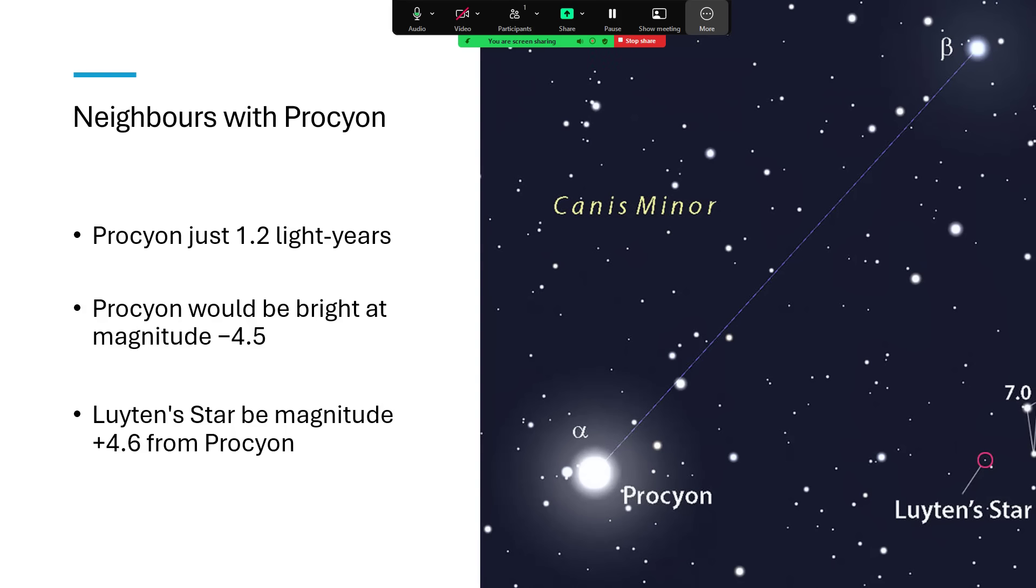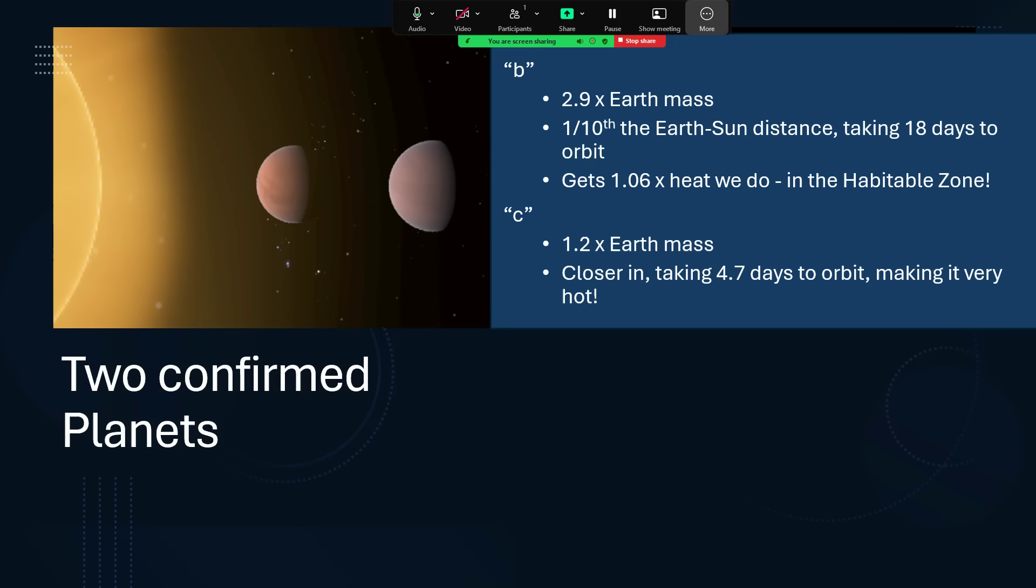Now, not only is it interesting because it's nearby, but because we have confirmed some planets. So two of them are known to be there for sure, B and C, and they're roughly speaking Earth-like planets. B is 2.9 times the Earth's mass and a little larger, and it's 10 times closer to the star than the Earth is to the sun, just going around in an 18-day-long orbit. And as a result of that closer proximity to a rather more feeble star, it's getting almost 100%, 1.06 times the heat that we do here on Earth from the sun. So that very much puts this in the habitable zone.